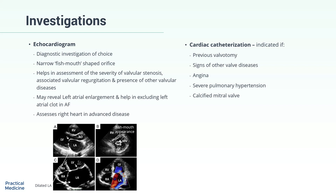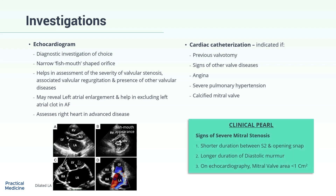Exam pearl: Features of severe stenosis include a shorter distance between S2 and the opening snap, a longer duration of diastolic murmur, and on echocardiography, a mitral valve area of less than 1 square centimeter.